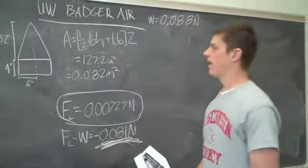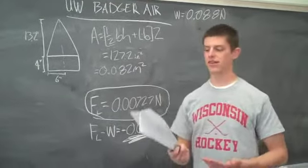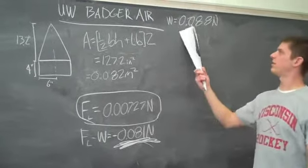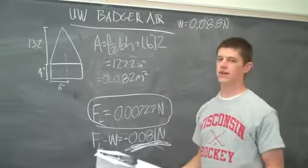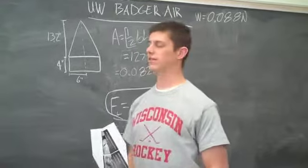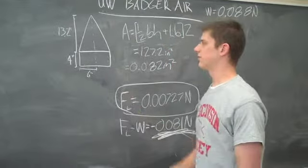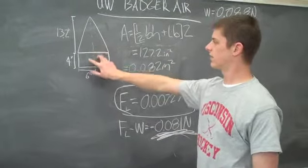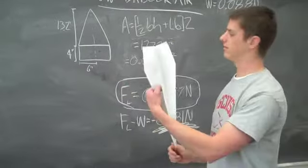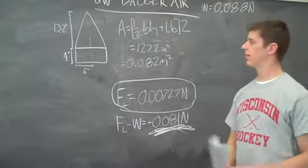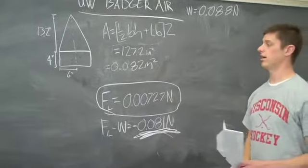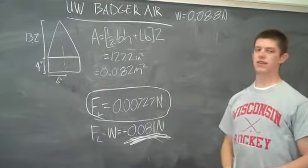And then plugging in all those numbers, we get an uplift coefficient of 1.645. We looked at our UW Badger airline, and we first weighed this and found the weight of our paper to be 0.088 newtons. And then we had to figure out the area that would be perpendicular to the path of flight. So we simplified it as two triangles and two squares, as you can see, pretty similar. And we calculated or measured the dimensions. From that, we were able to calculate the area, and we found that to be 0.82 meters squared.